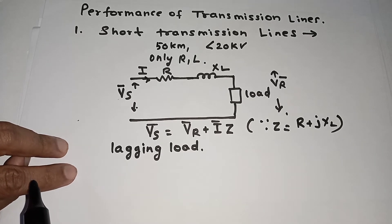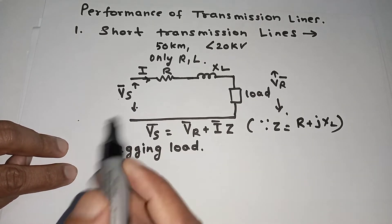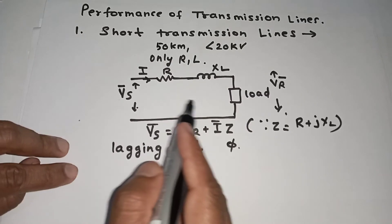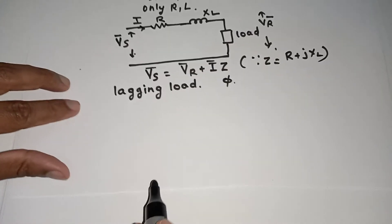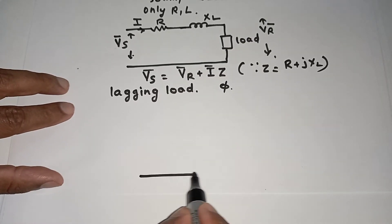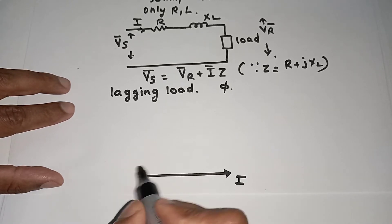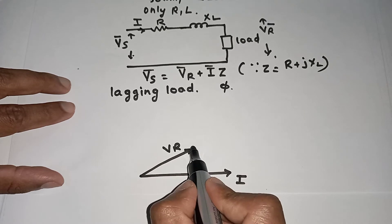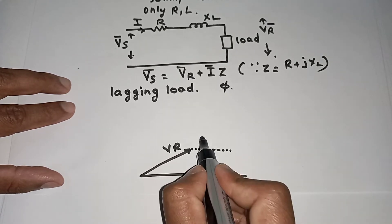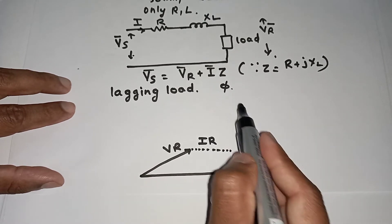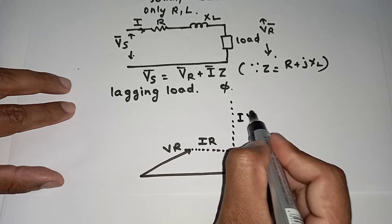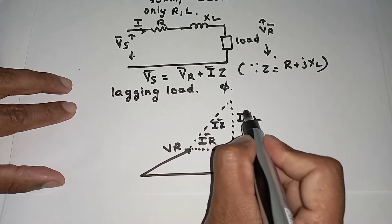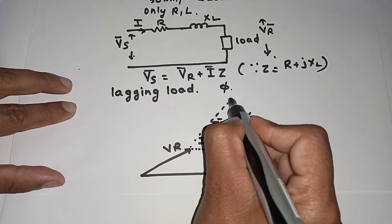For a lagging load, the current lags behind the voltage by some angle phi. Now we'll make the phasor diagram of this short transmission line. First, we draw the reference current phasor, then VR, the receiving-end voltage. Along the horizontal, the drop in the resistive part is I×R, and perpendicular to it is I×XL. The resultant is I×Z, which are all vector quantities.